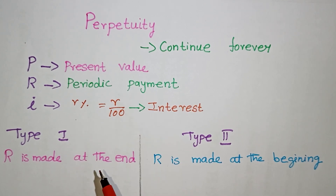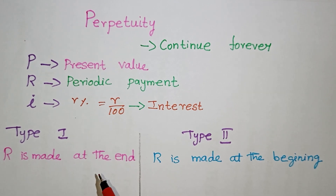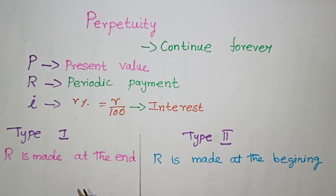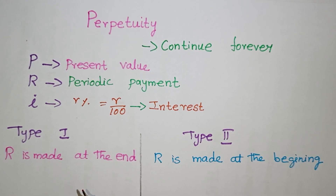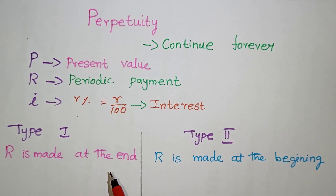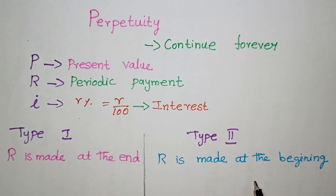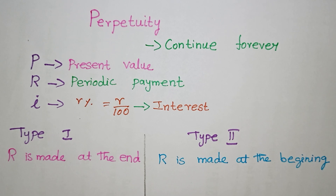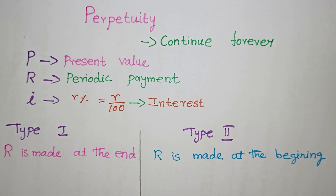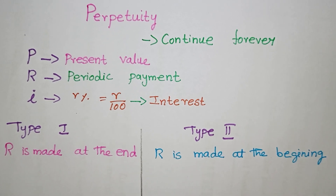There are two types of perpetuity. Type 1: the periodic payment R is made at the end of the period. For example, every 30th of the month you pay rent — you receive payment at the end of the period. Type 2: the periodic payment R is made at the beginning of the period — you pay at the start of the month to use the house.